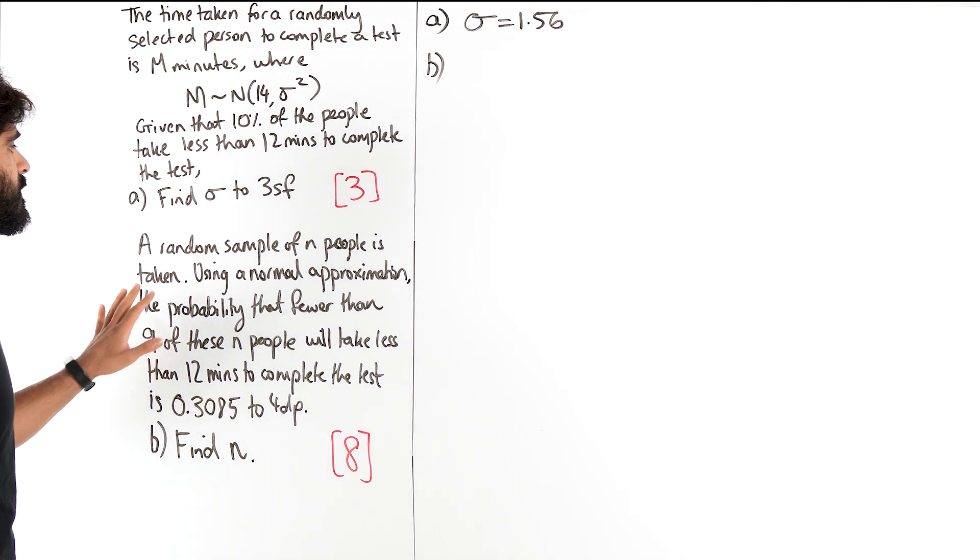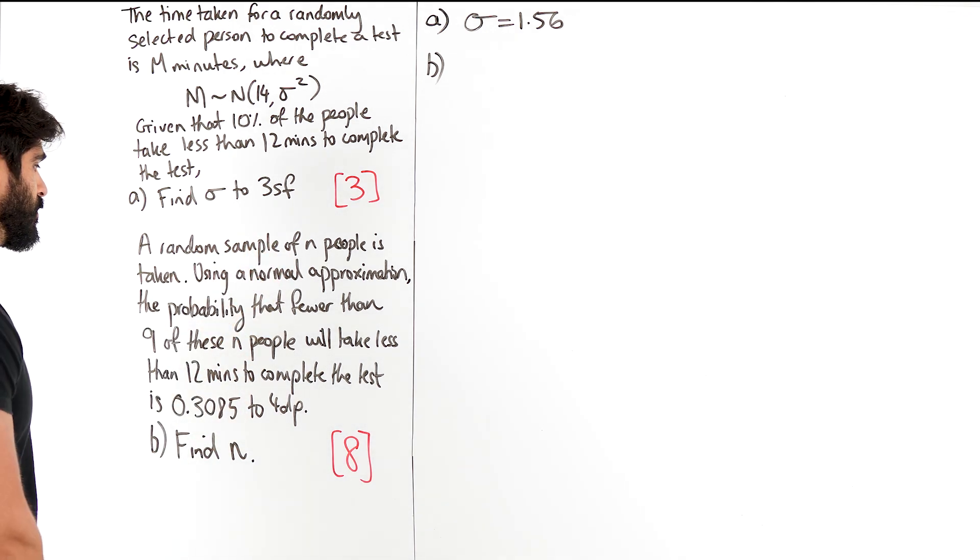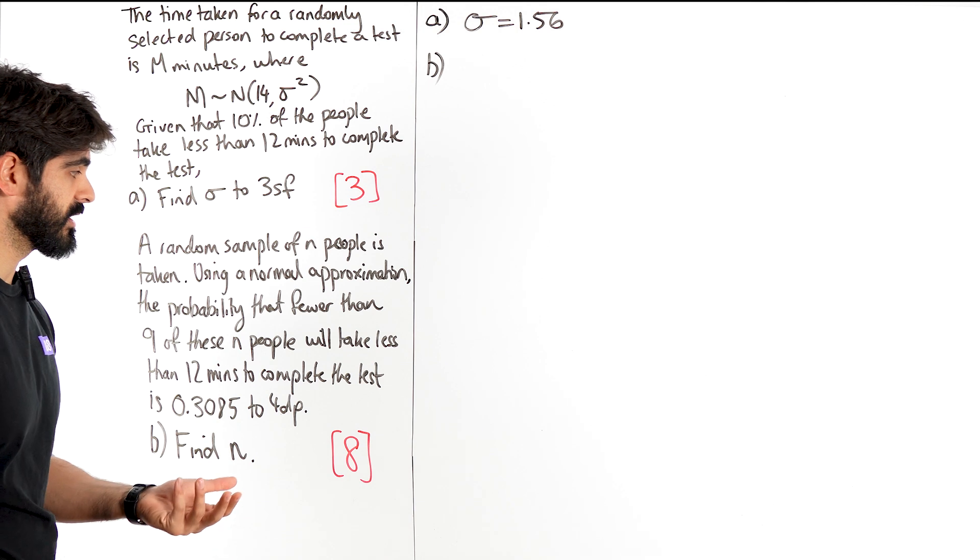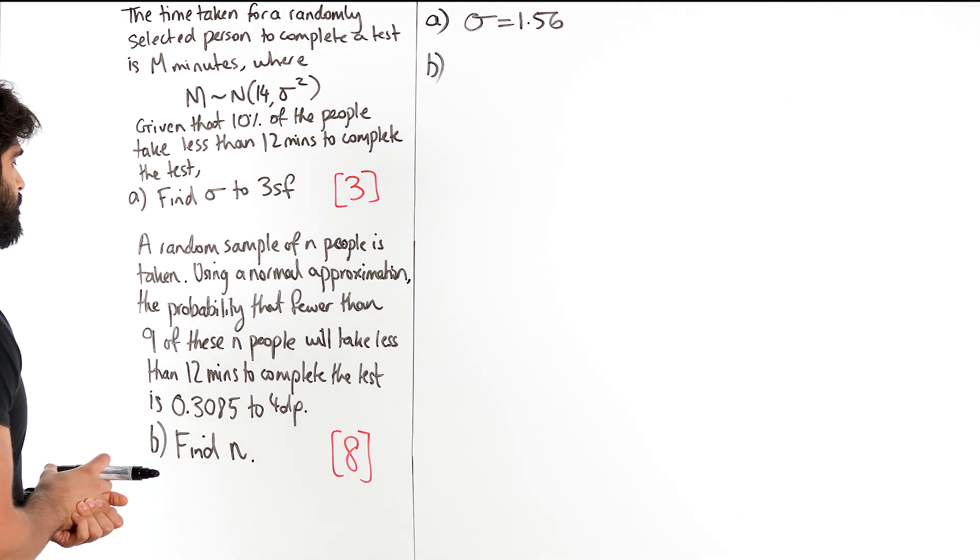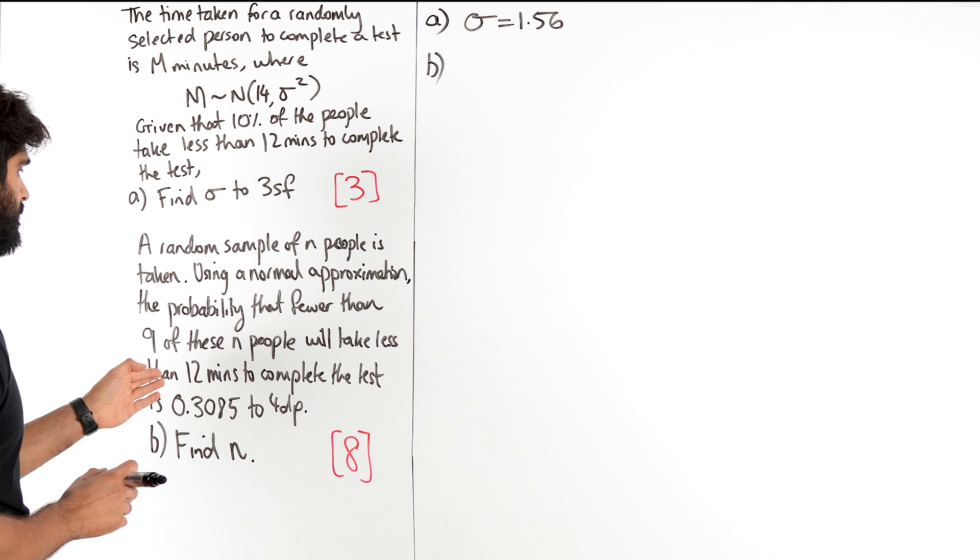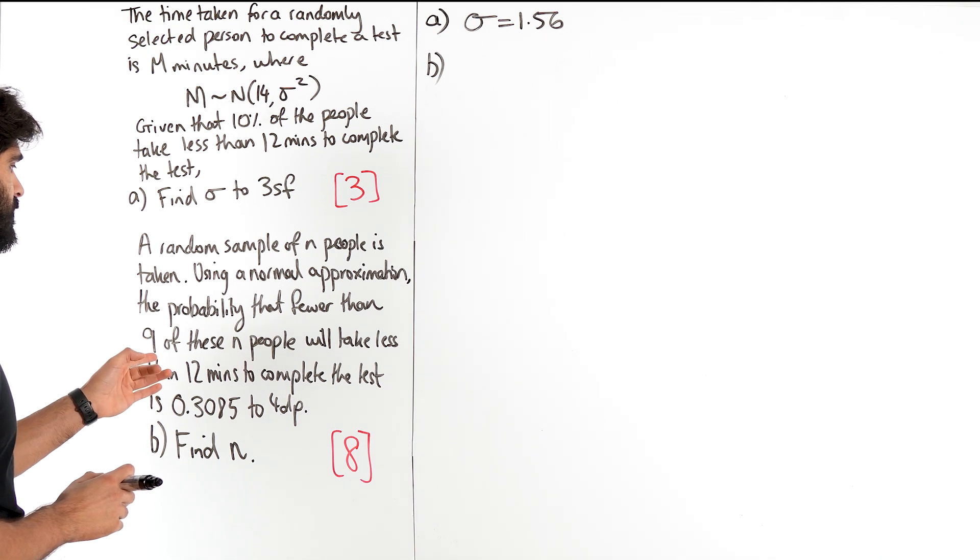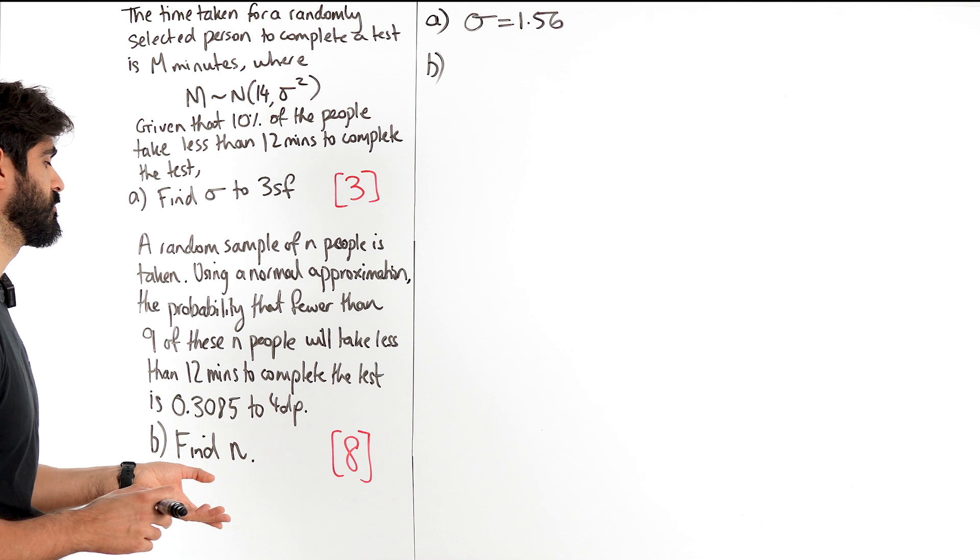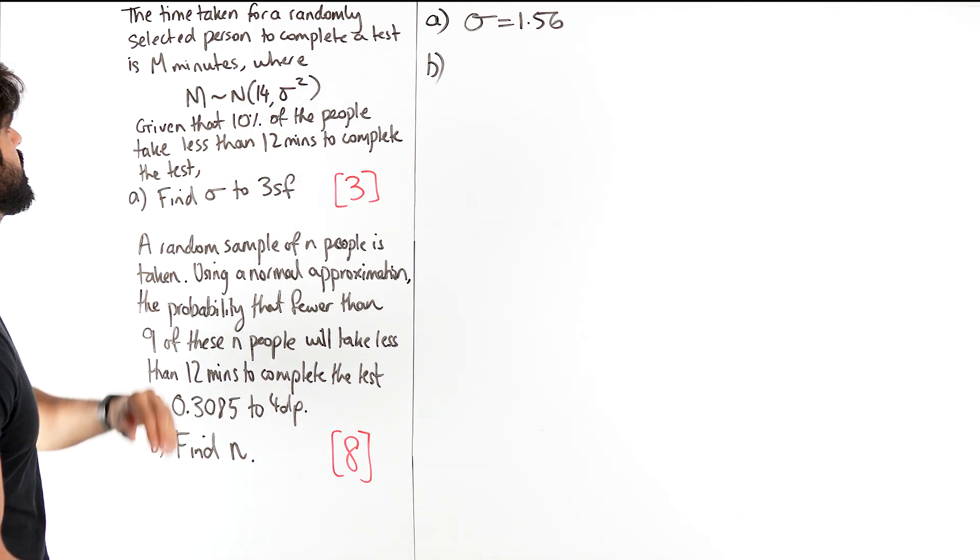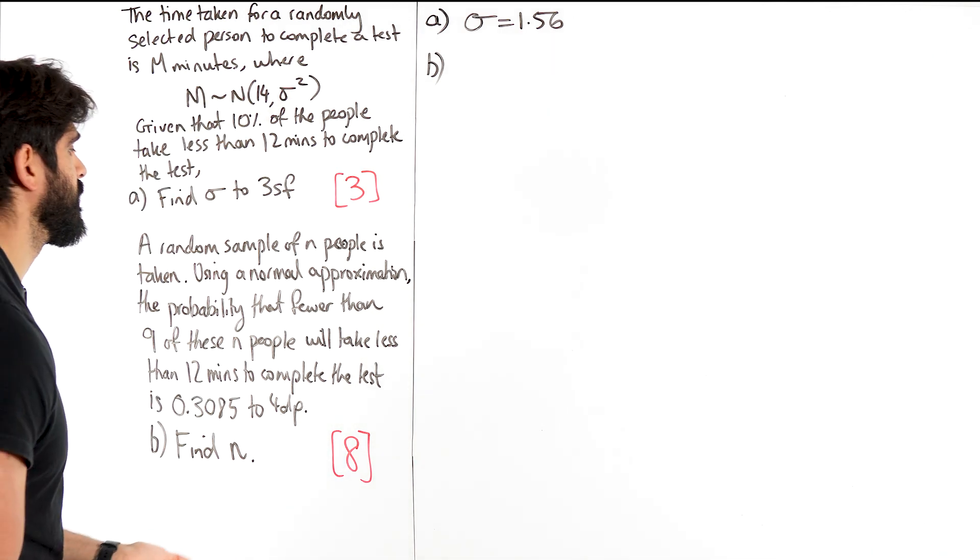Okay, so we've taken a sample. They want us to use a normal approximation. There's a reason why they're asking us to do this because to find n you need to. It says the probability that, well, the first thing I need to do is I need to redefine the distribution because we're talking about n people. Before we were talking about 14 people, right? So let's redefine.